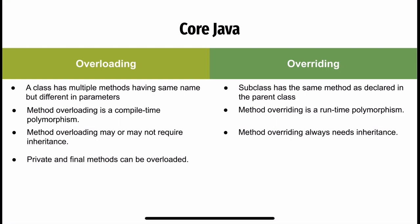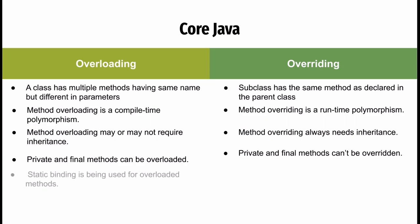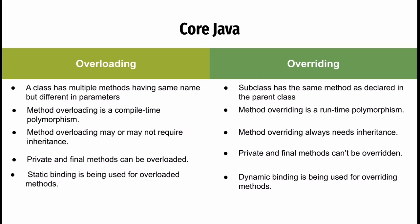Private and final methods can be overloaded, whereas private and final methods cannot be overridden. Static binding is used for overloaded methods, whereas dynamic binding is used for overriding methods.